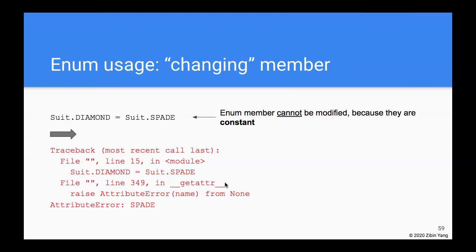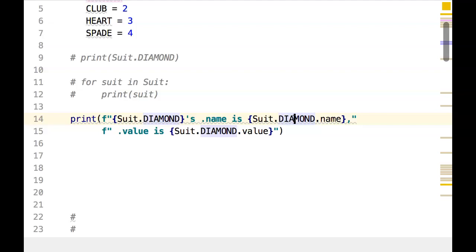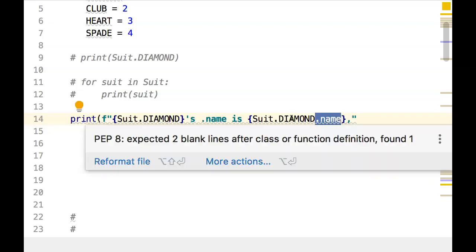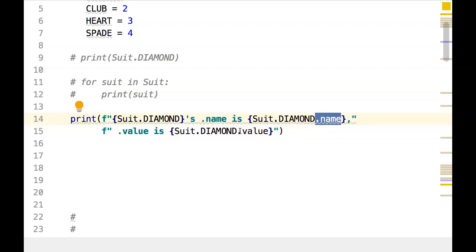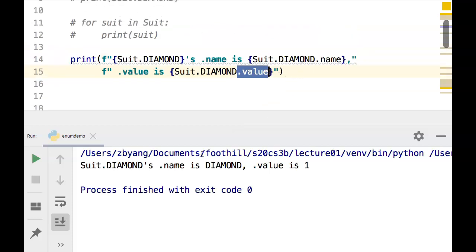Another very nice capability we have now is that each of the members now has a .name attribute and a .value attribute, which is the string representation of the enum member and an integer representation of the enum member. So let me run it. The .name is just 'DIAMOND', just the name of the member without the suit. in front.